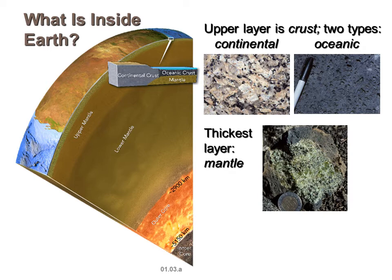What are the two types of crust? We have continental crust and oceanic crust. The noticeable differences are color — continental is light, oceanic is dark — and thickness: continental crust is thicker than oceanic crust.